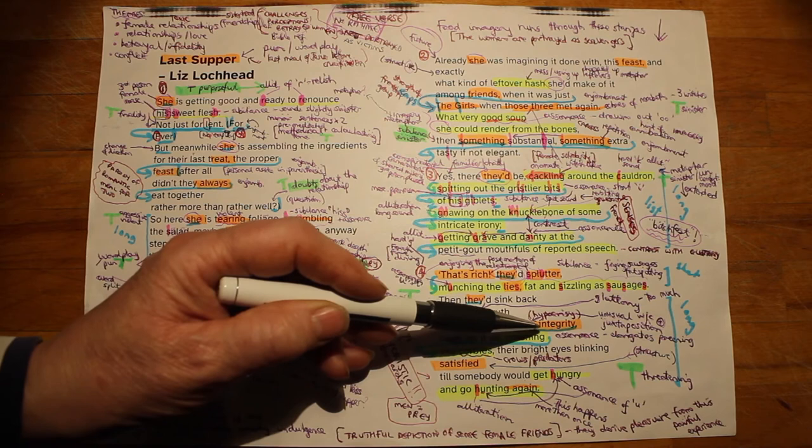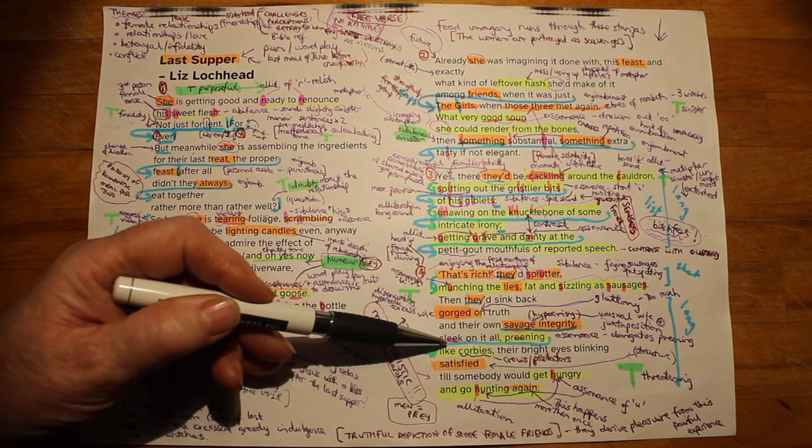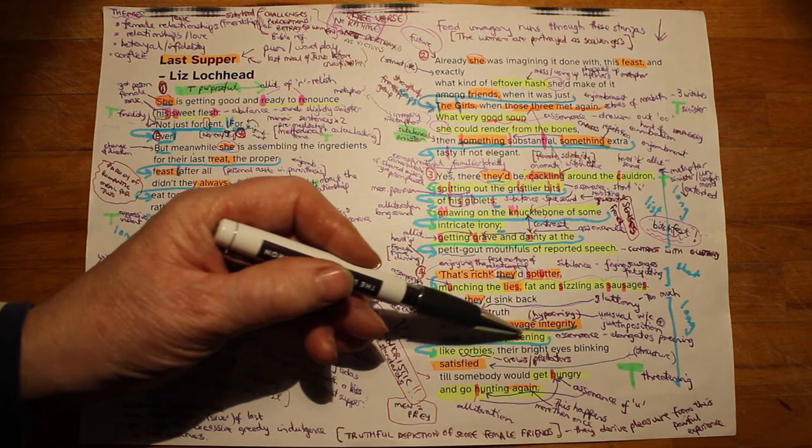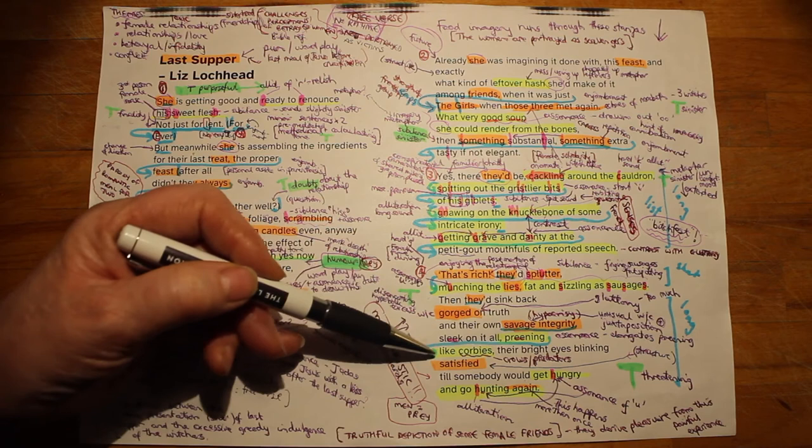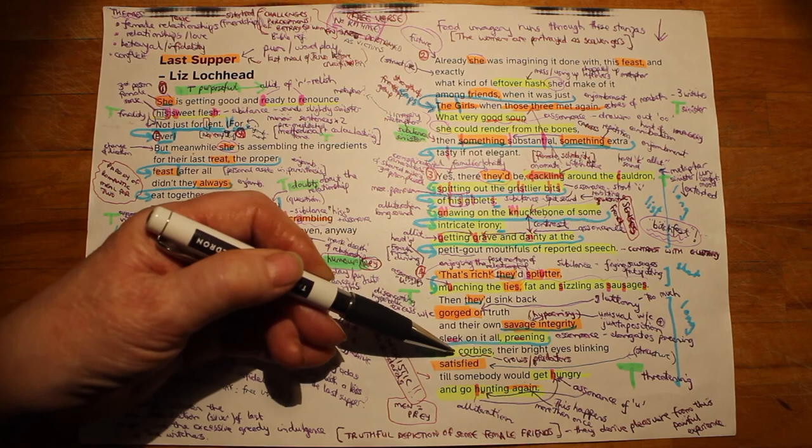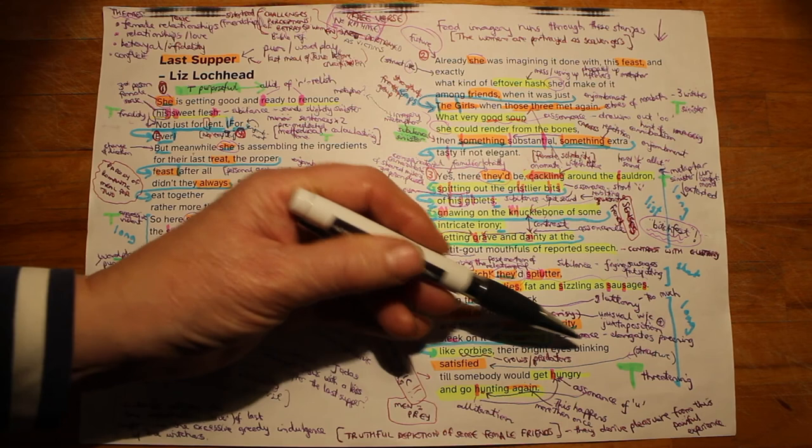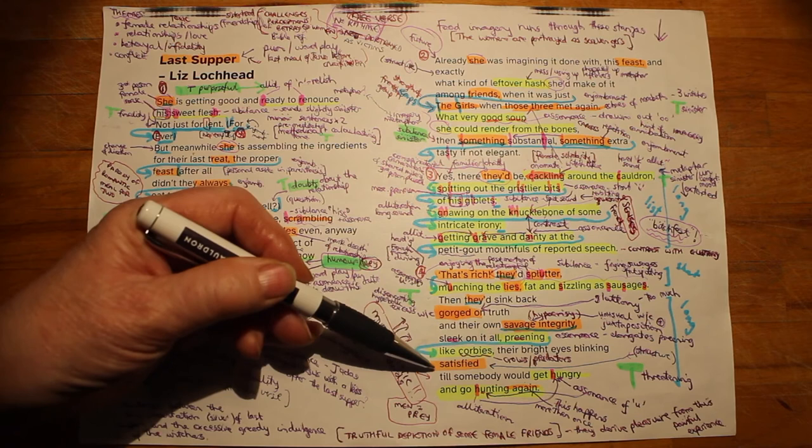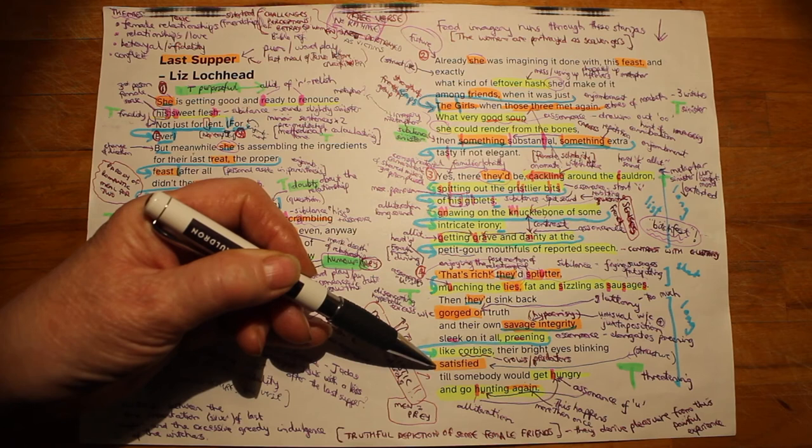And then here, the sound, the assonant qualities of sleek and preening, all seem to add to the rather unpleasant description and portrayal of these women as they gather together to pour over the remains of their friend's relationship. It's also worth noting here, the imagery comparing these women to corbies, which is a Scottish word for carrion crows. And carrion crows feast on dead flesh, effectively. So that isn't a very pleasant portrayal of these women, but it's very vivid. Their bright eyes blinking. We've got the two B sounds there, which is very effective in making them seem alive and satisfied. Look how this stands on its own here, making it stand out. And it implies that they've gorged themselves until they're absolutely full of all the bitching that they've effectively done through this process.